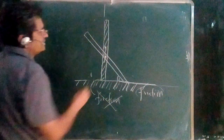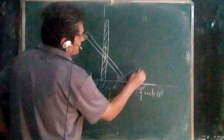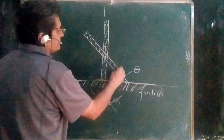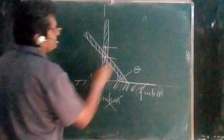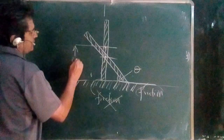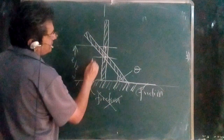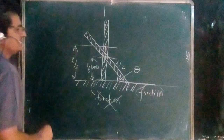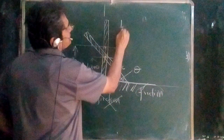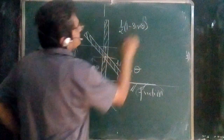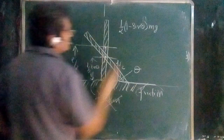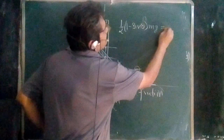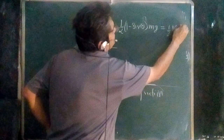Let us now find the angular velocity of the rod when it has fallen to an angle theta with the horizontal. Initially the center of mass was at height L/2. When the rod makes angle theta with the horizontal, the height of the center of mass is L/2 · sinθ. So the height fallen is L/2 · (1 − sinθ), and the potential energy lost is mg times this height, which gets converted into kinetic energy.